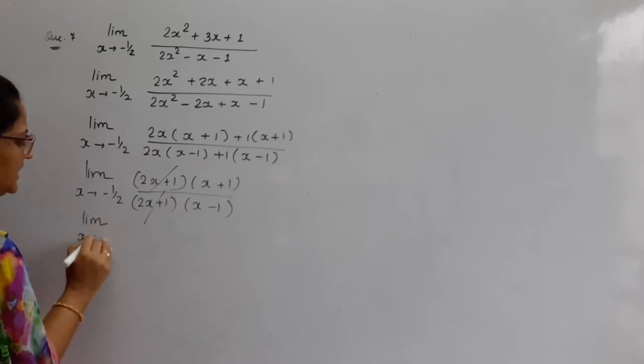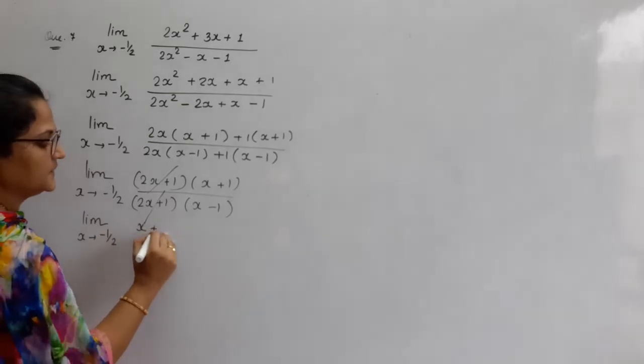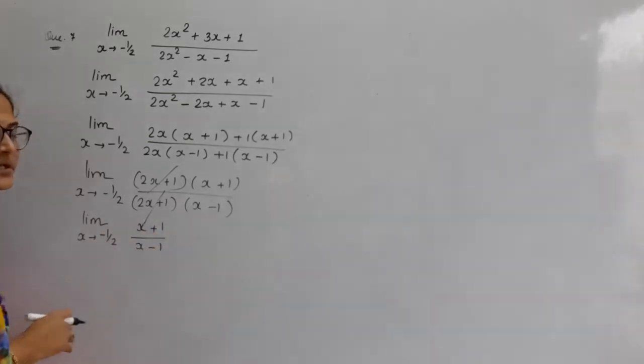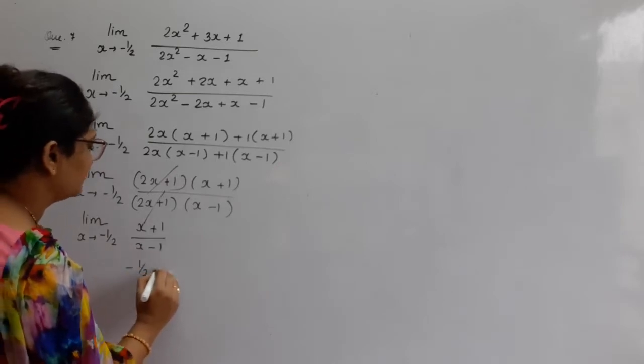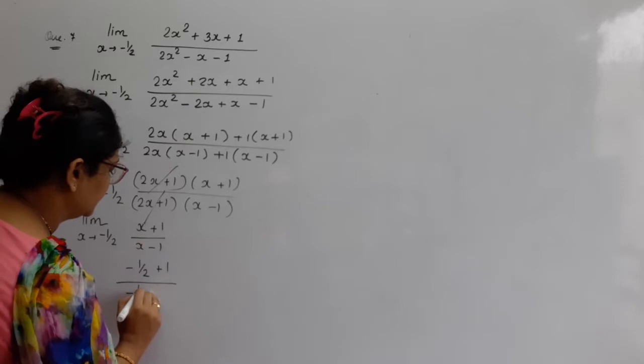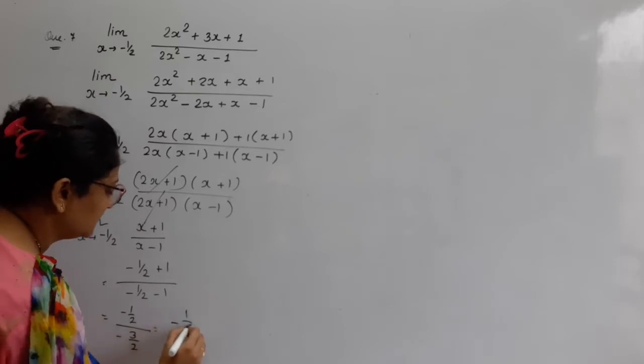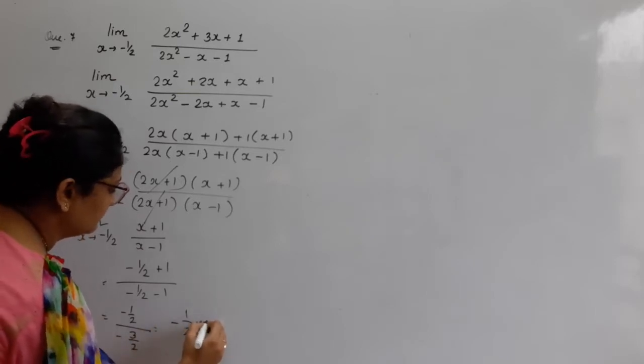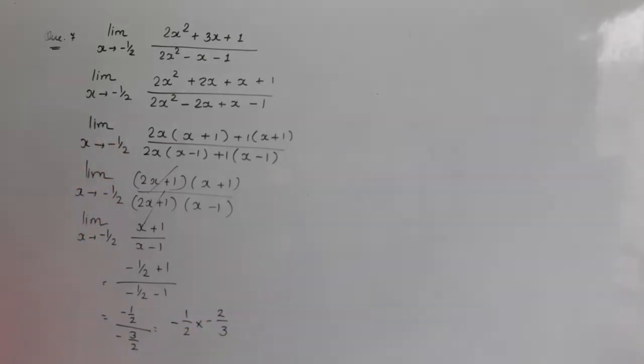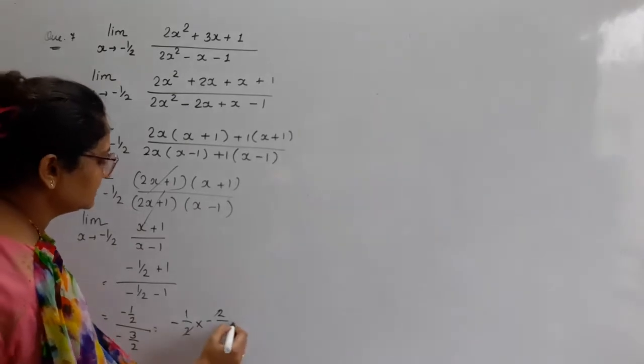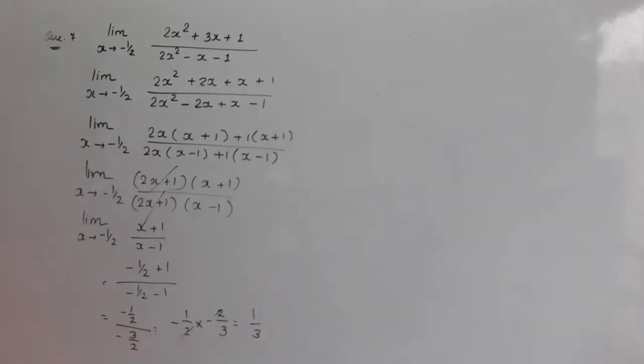2x common nikaalo. Bacha kya? x minus 1. Bacha kya? x minus 1. Limit x tends to minus half. 2x plus 1, x plus 1, 2x plus 1, x minus 1. This is common nikaalo. So limit x tends to minus half. x plus 1, x minus 1.